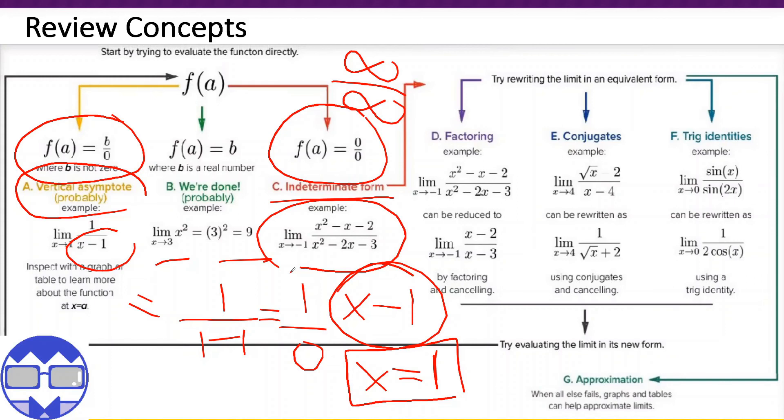So we are going to discuss these three methods. We have factoring, we have conjugate, we have trig identities.